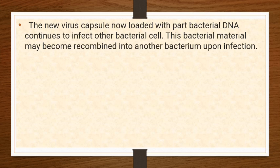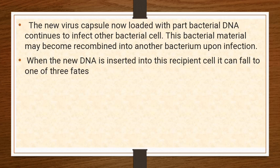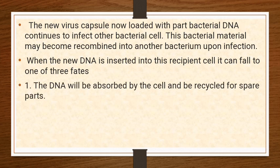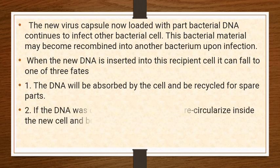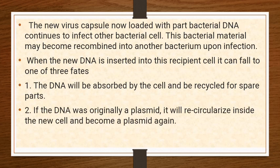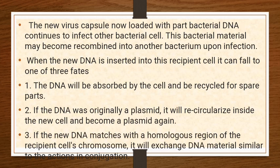The new virus capsule, now loaded with partial bacterial DNA, continues to infect other bacterial cells. This bacterial material may become recombined into another bacterium upon infection. When new DNA is inserted into the recipient cell, it can follow one of three fates: the DNA will be absorbed and recycled for spare parts; if the DNA was originally a plasmid, it will recirculate and become a plasmid again; or if the new DNA matches a homologous region of the recipient chromosome, it will exchange DNA materials similar to conjugation.